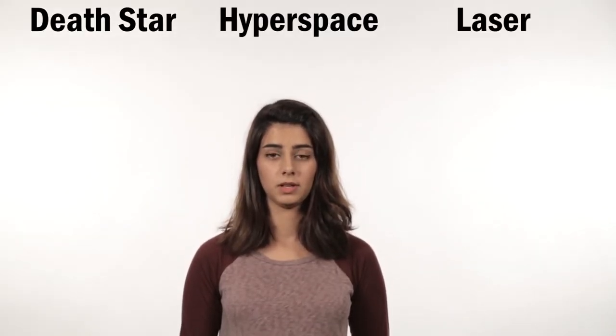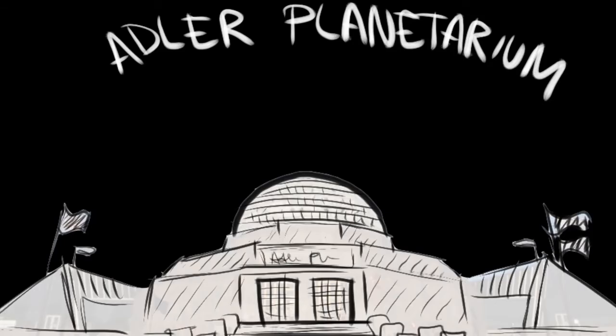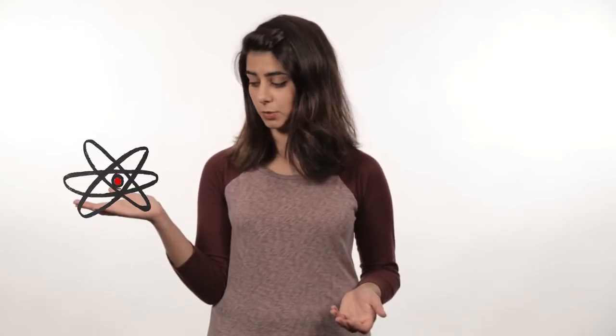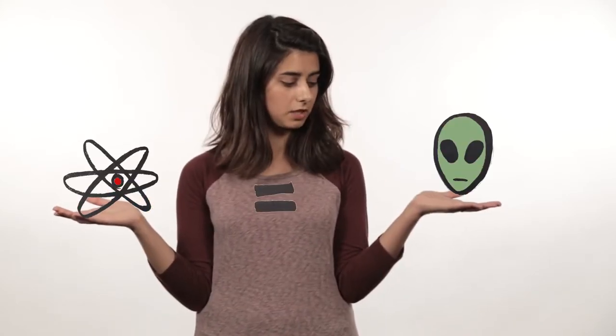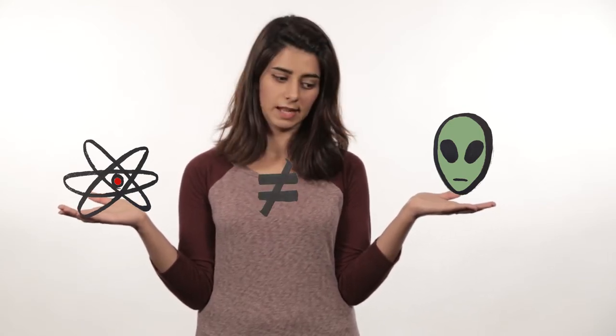In this language we have characters we both know, settings and plots we both know, and terms that we both know. And that makes talking to each other so much easier and fun. This is what I've been learning at the Adler Planetarium. Scientists there use this method to talk about different scientific concepts — either the similarities between science and science fiction, or the dissimilarities between them.